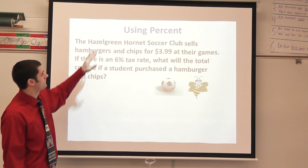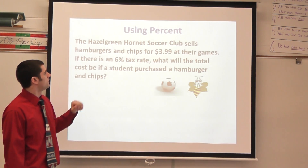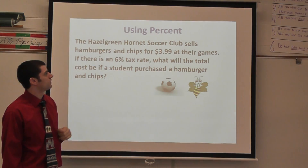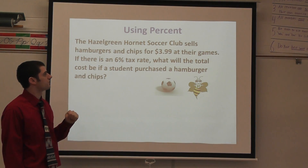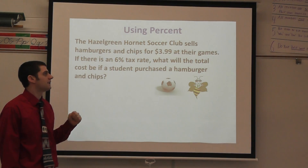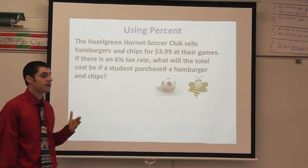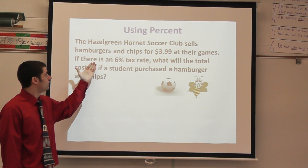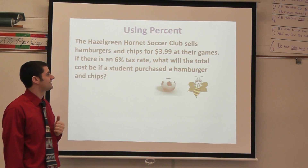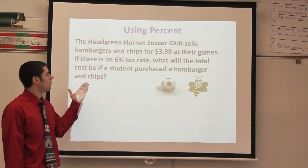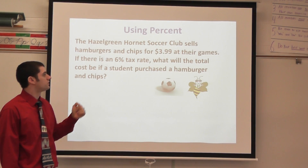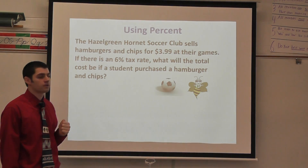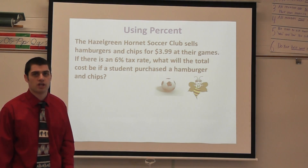In our first example, the Hazel Green Hornet Soccer Club sells hamburgers and chips for $3.99 at their games. There is a 6% tax rate. What will the total cost be if a student purchases a hamburger and chips?